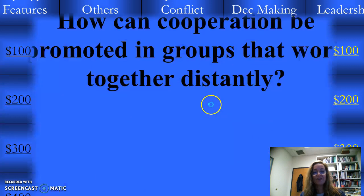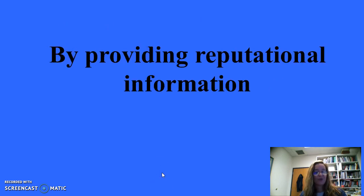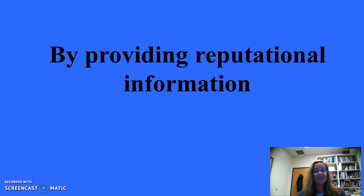Cooperation and conflict for 100: How can cooperation be promoted in groups that work together distantly, like in an online class? By providing reputational information. Part of what makes for good cooperation is social embeddedness — a sense of knowing the reputation of the other parties involved, often by knowing someone else who knows them.